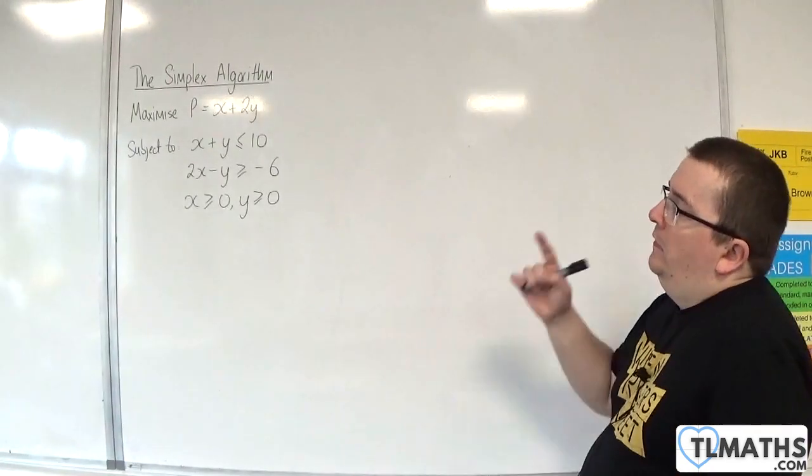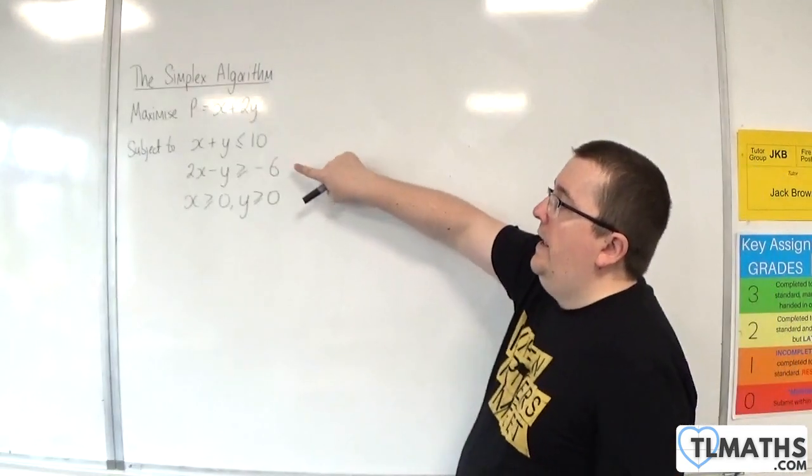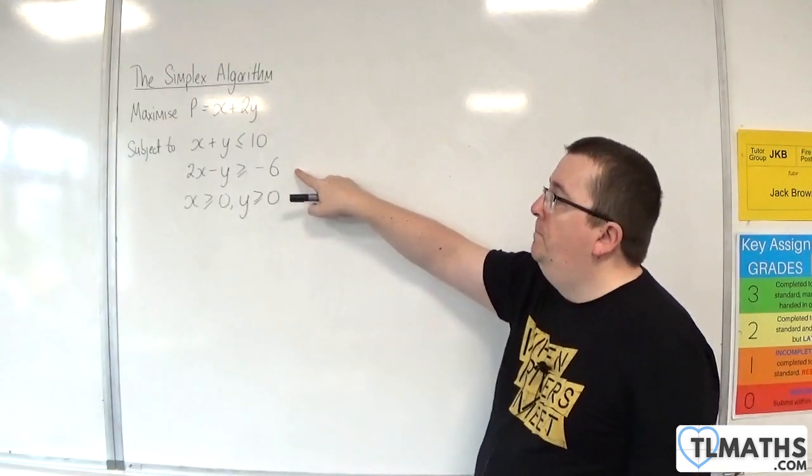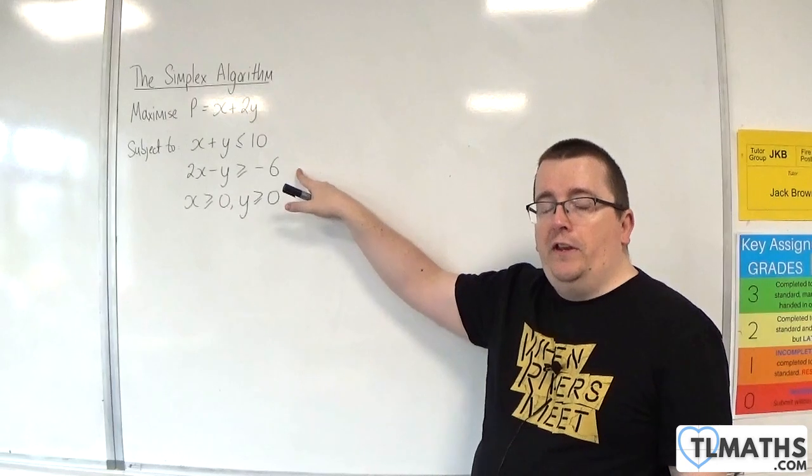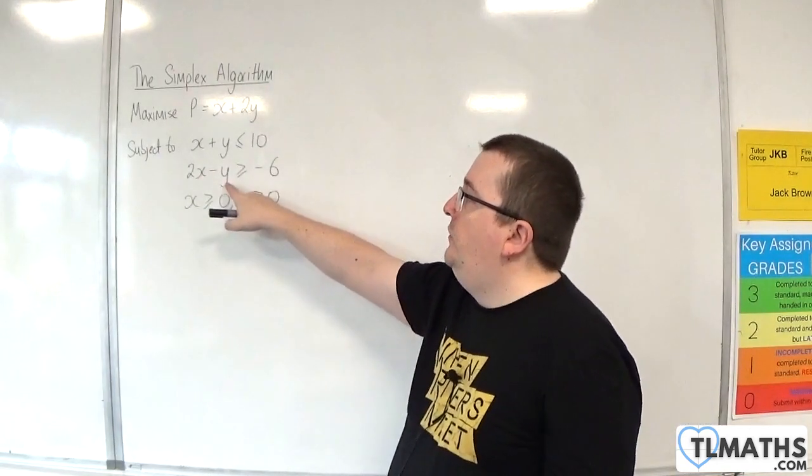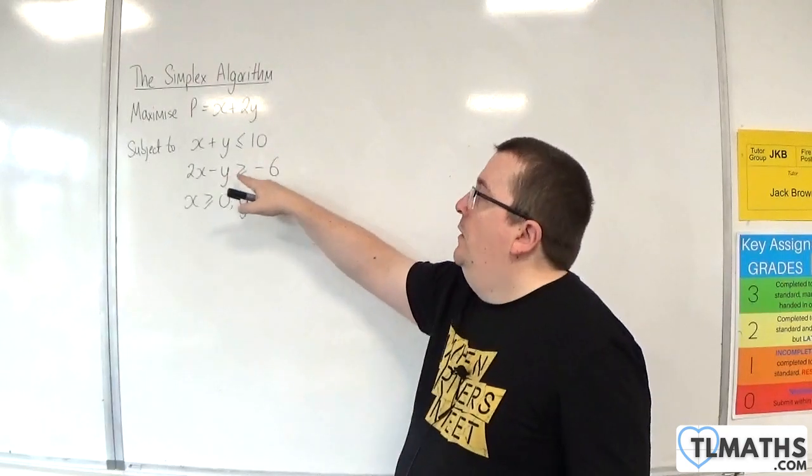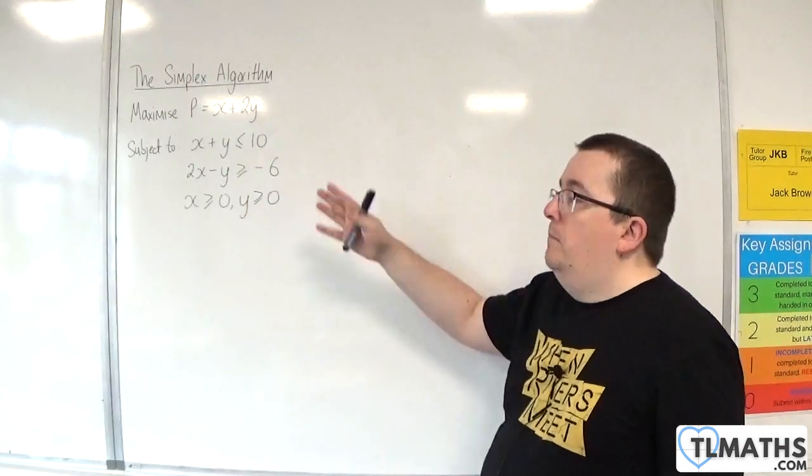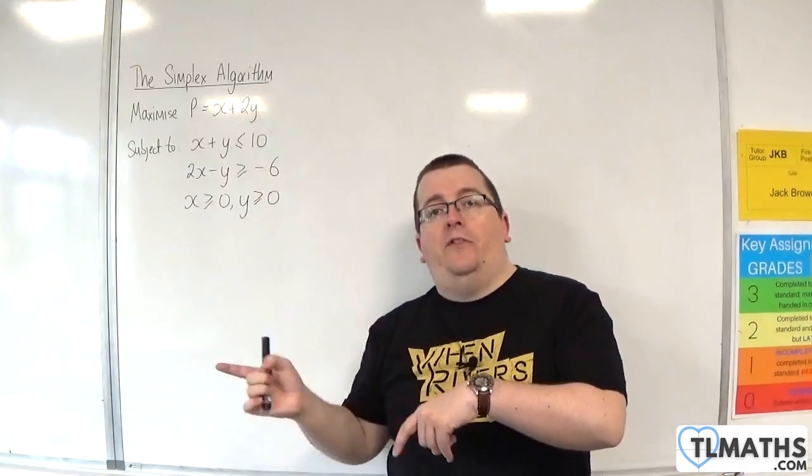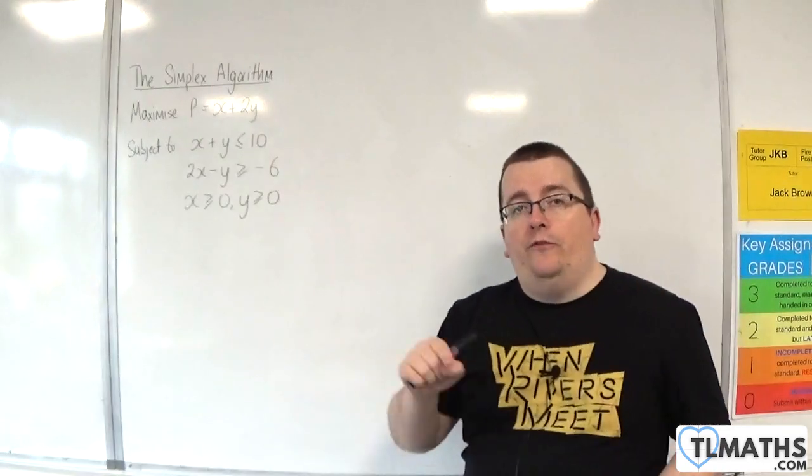However, the thing about this inequality is that the origin, 0, 0, still satisfies this inequality, because 2 lots of 0 take away 0, is of course 0, which is greater than minus 6. So the origin satisfies that. So that means that the origin is within the feasible region.